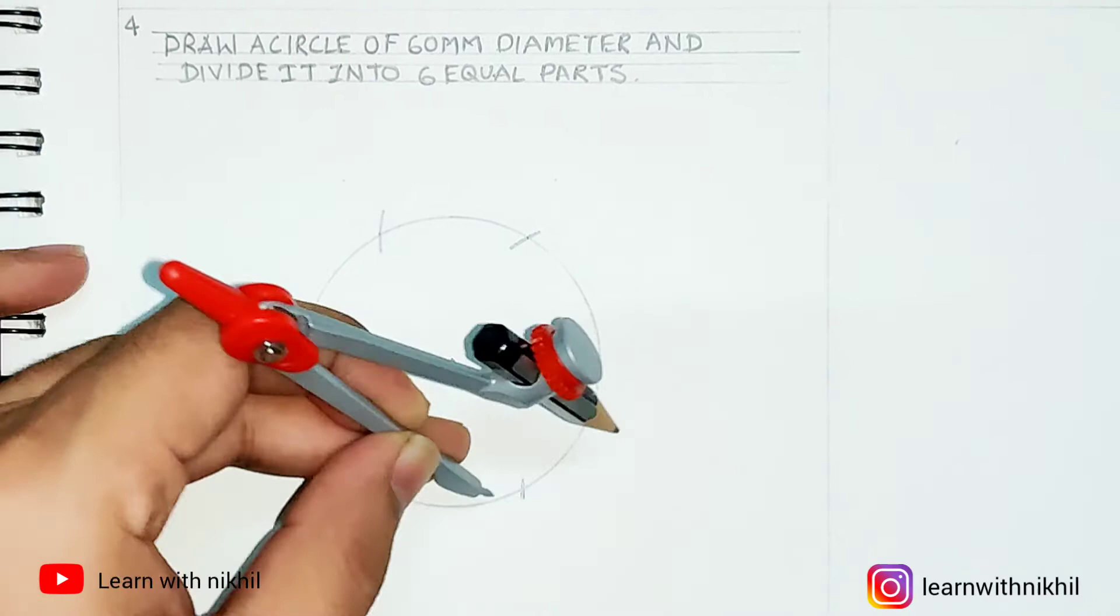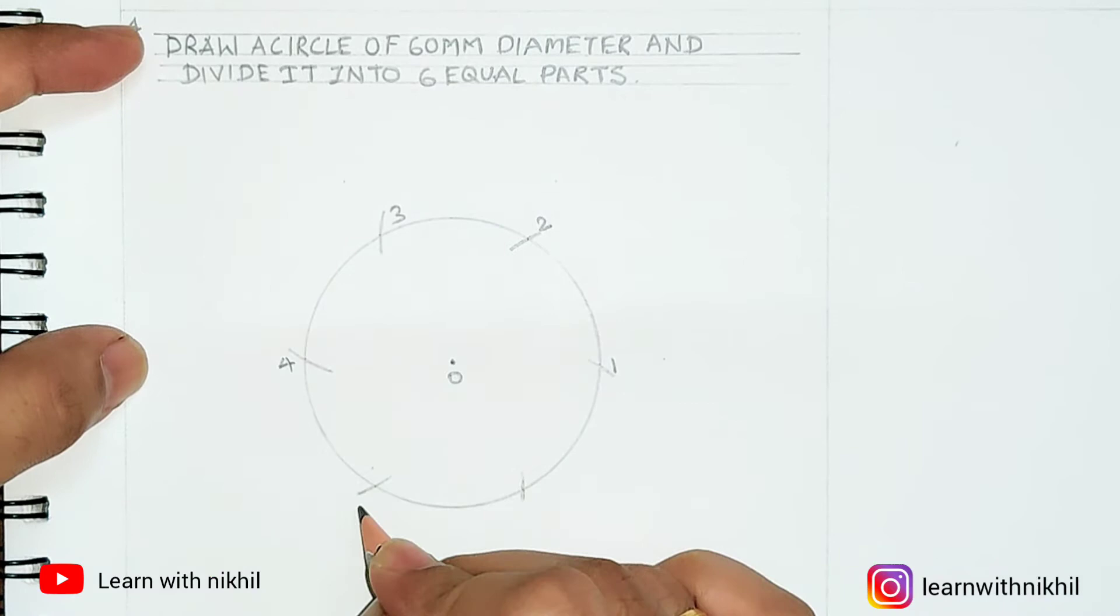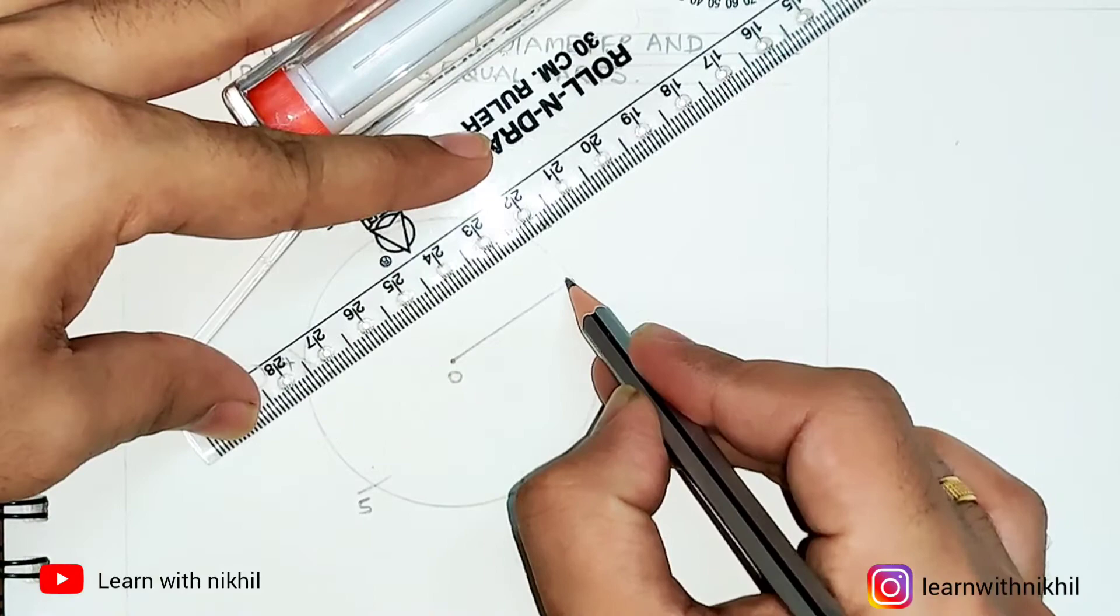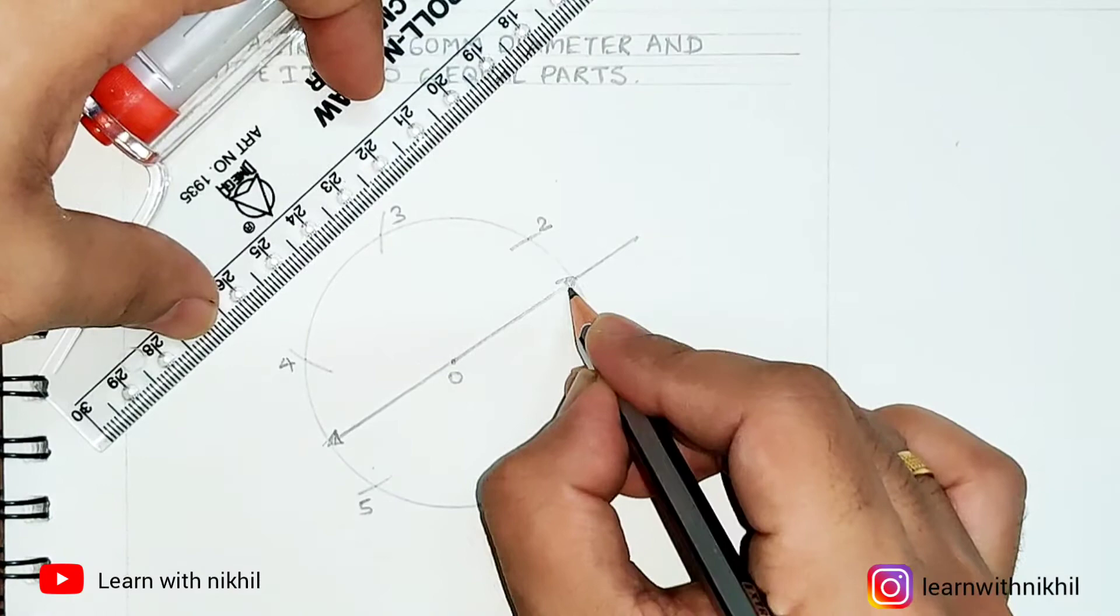Now keeping the radius as 30, I am going to cut the circle into those parts. I will name this as one, two, three, four, five, six. Now with this, I have been able to divide the circle into six equal parts.